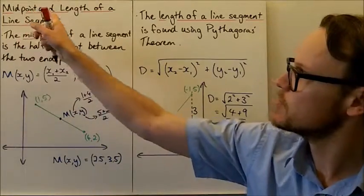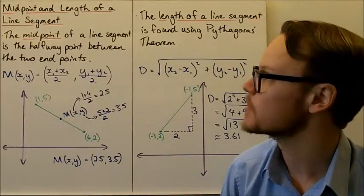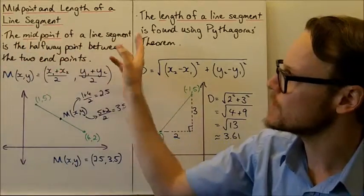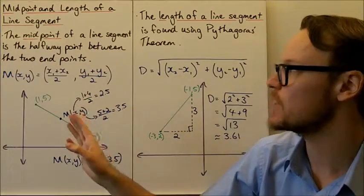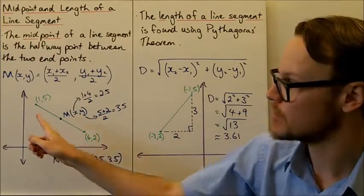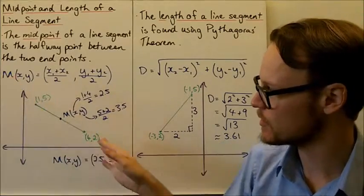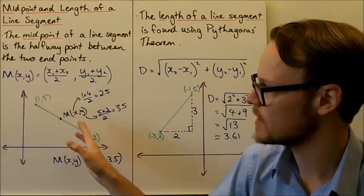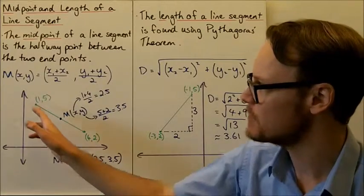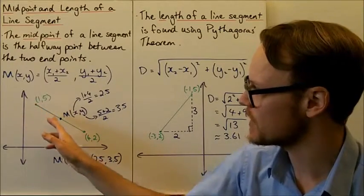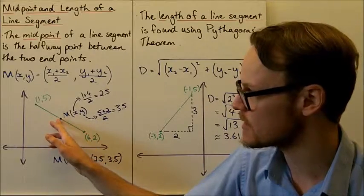Today we're going to look at midpoint and length of a line segment. The midpoint of a line segment is the halfway point between the two endpoints. A line segment has two definite ends, and the midpoint is going to be halfway between those two ends, right in the centre.